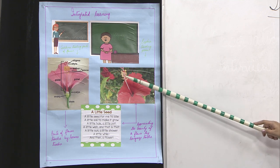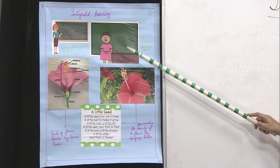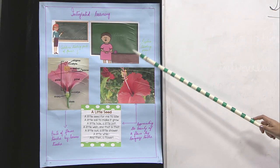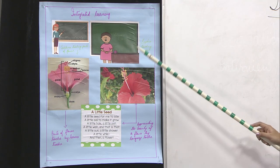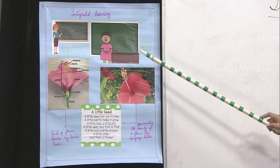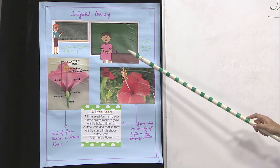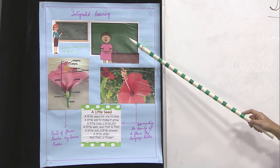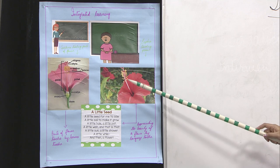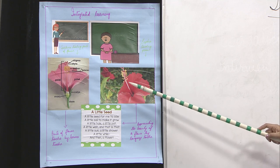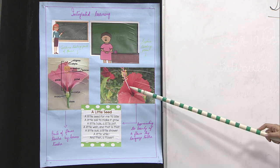One day, both of them decided to take the class together, combining science and poetry. The topic they chose was related to flowers. They planned the lesson in detail, wherein Ms. Sushma was to deal with the different types of flowers and the parts of hermaphrodite flowers — also called the complete flower — and Ms. Sophia was to recite and develop appreciation for the beauty of different types of flowers.